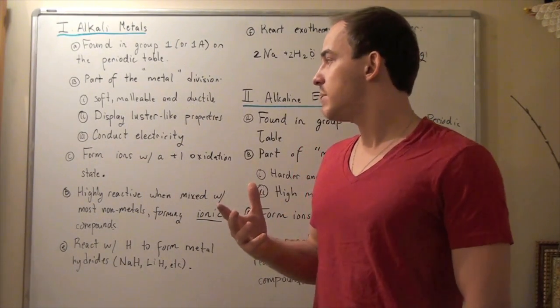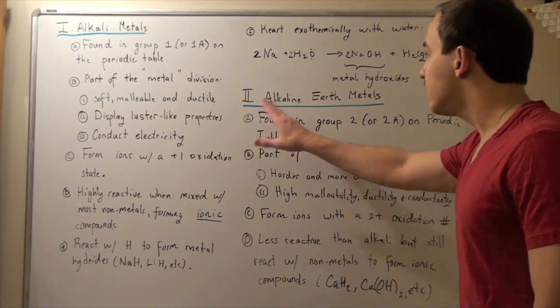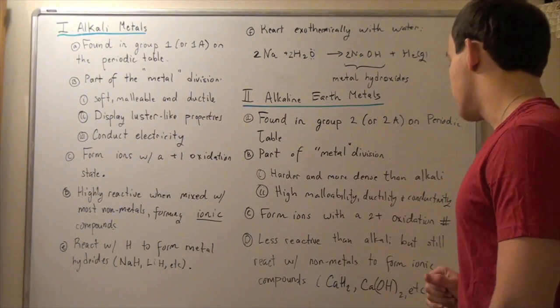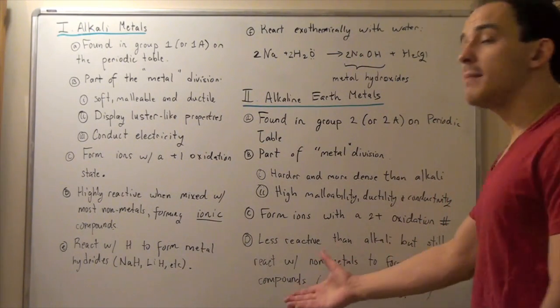That means they're more likely to lose electrons. Alkaline earth metals are less reactive than alkali metals but still react with nonmetals to form ionic compounds.